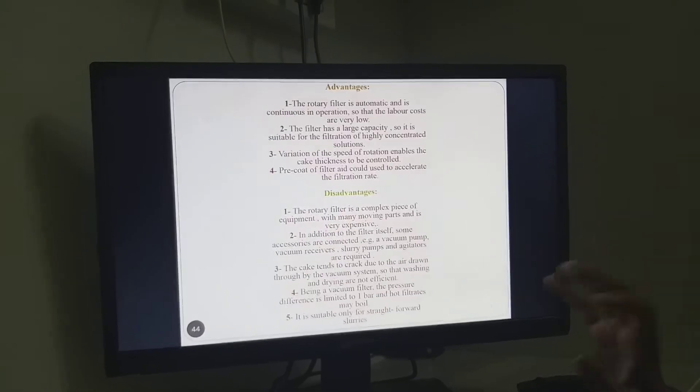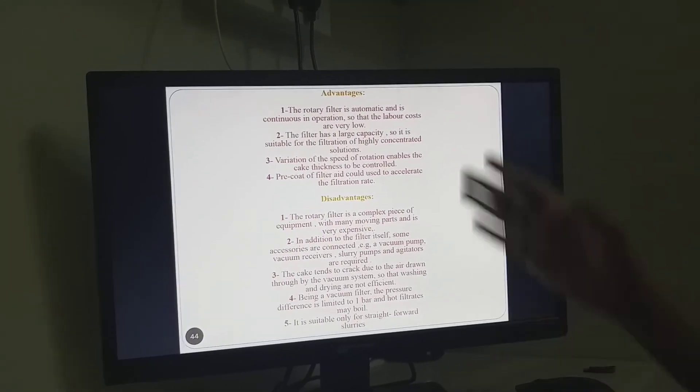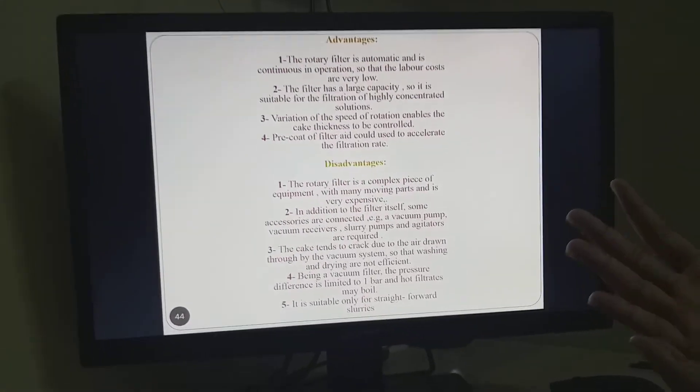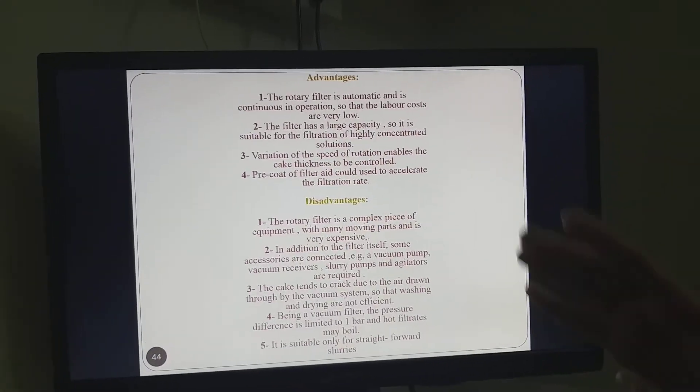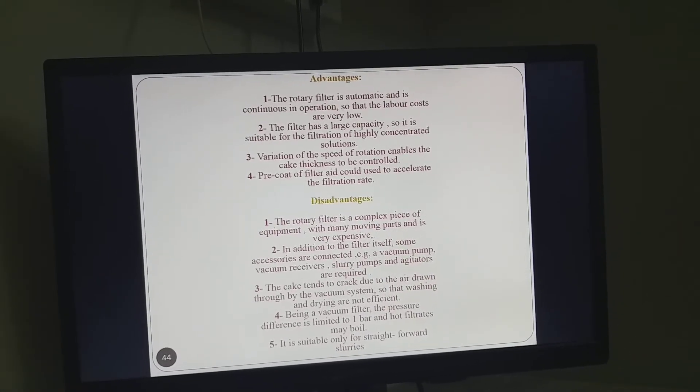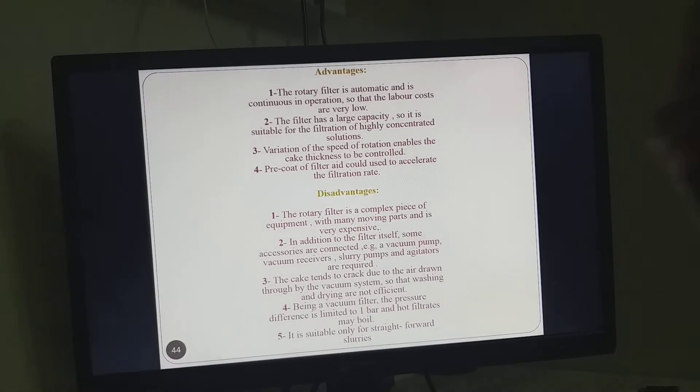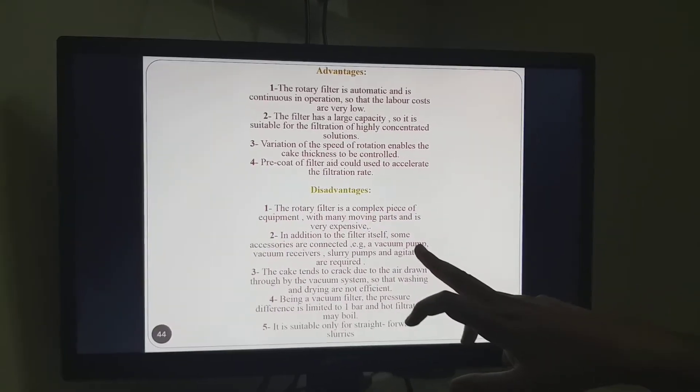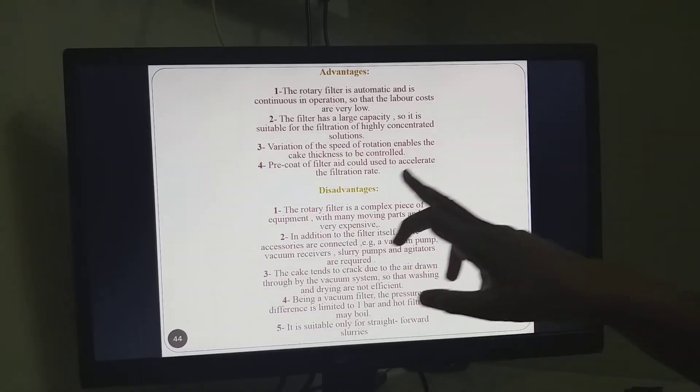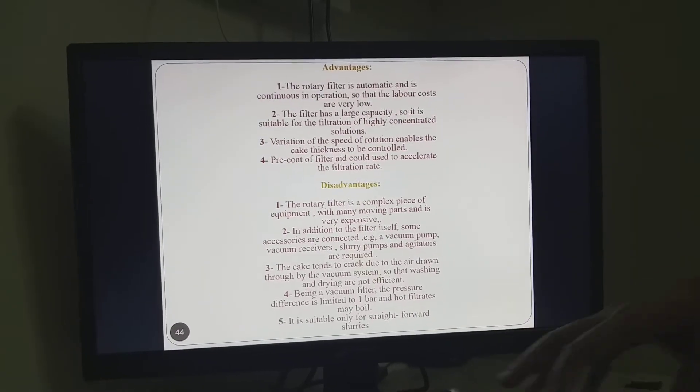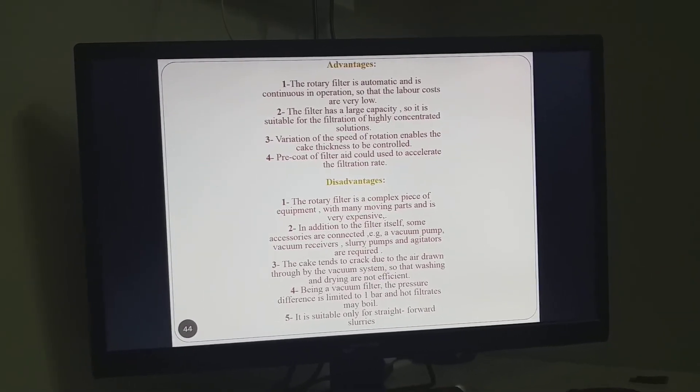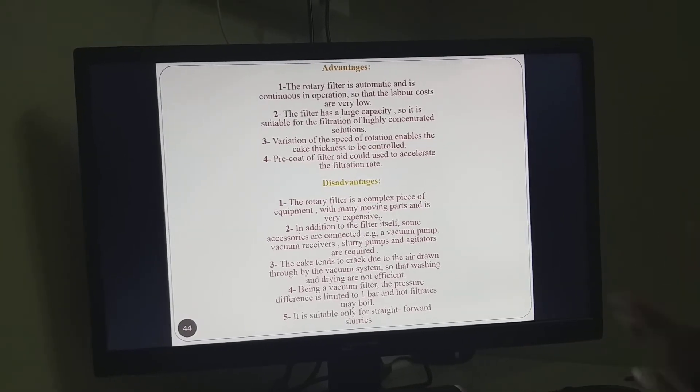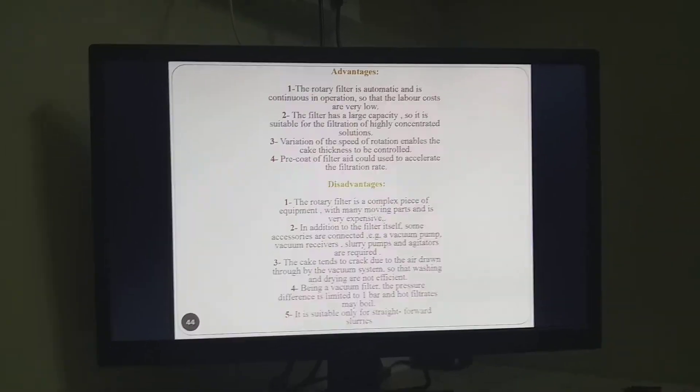The rotary vacuum filter has many advantages: low cost filter that can handle large capacity, variation of speed, and pre-coating filter methods can be applied. Talking about disadvantages, as it has many moving parts it's very expensive with slurry pump and maintenance issues. Vacuum is also expensive, but it can handle large amounts of slurry.